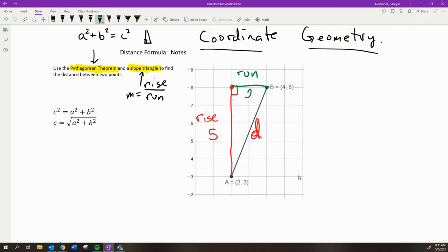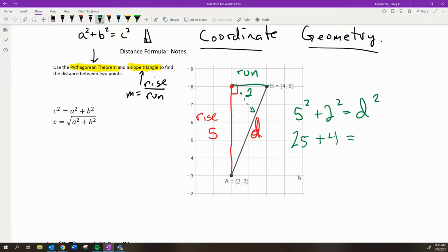And so I could do 5² + 2² = d², because that distance is the hypotenuse of the right triangle. And it will always be that way, the diagonal. And then you would just go through the motions here: 25 + 4.